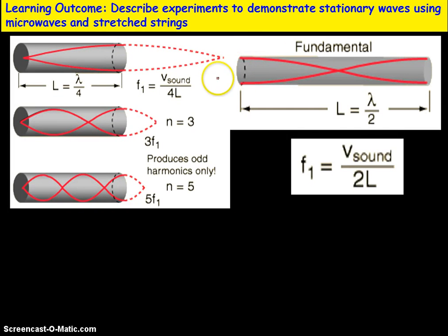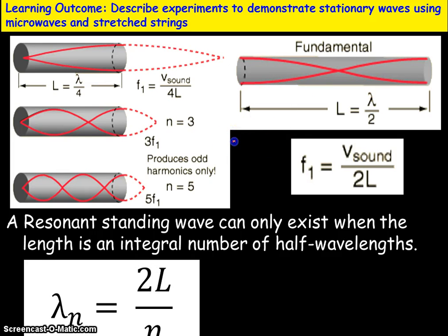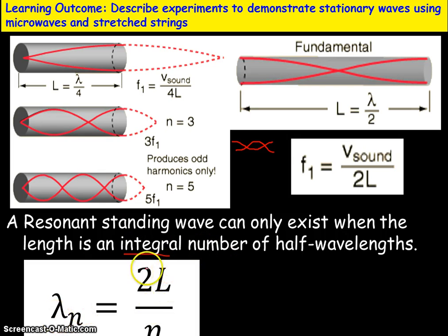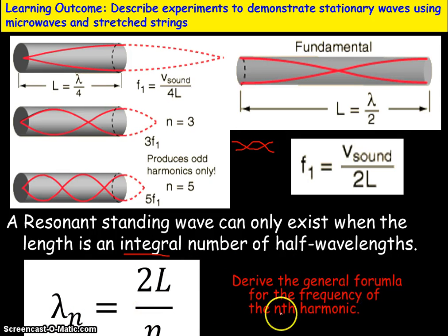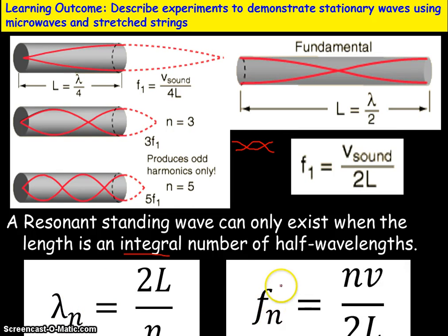For a tube open at both ends, there must be an anti-node at each end. The fundamental frequency pattern has an anti-node at each end with a node in the middle. You can add a harmonic each time in the middle, and a tube open at both ends can produce every integer multiple of f₀: f₀, 2f₀, 3f₀, etc., as long as n is a whole number. The wavelength is given by λ = 2L/n, and the frequency can be derived from v = fλ, giving f = nv/2L, where v is the speed of sound.